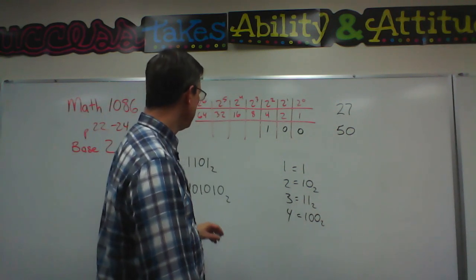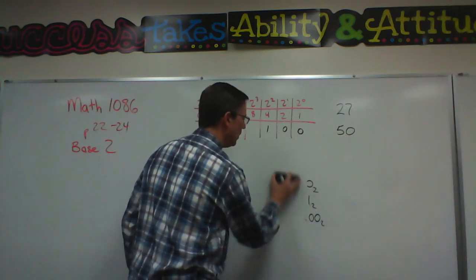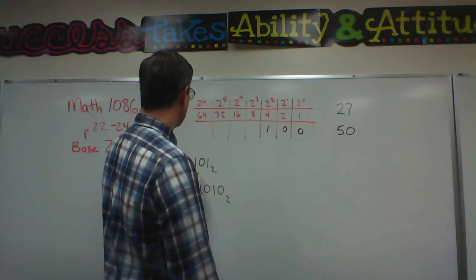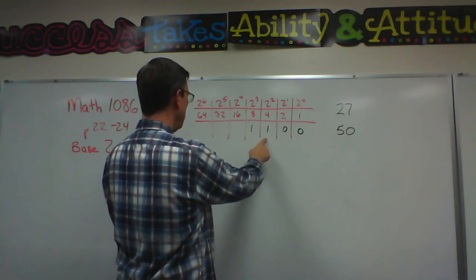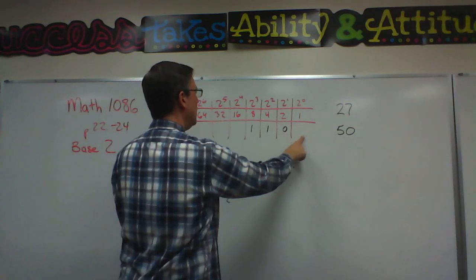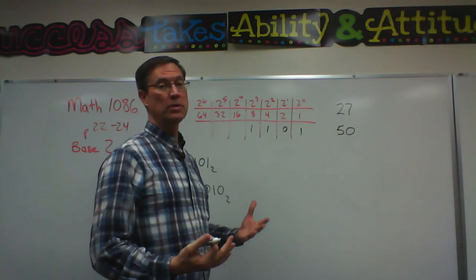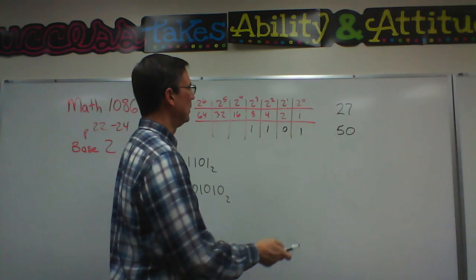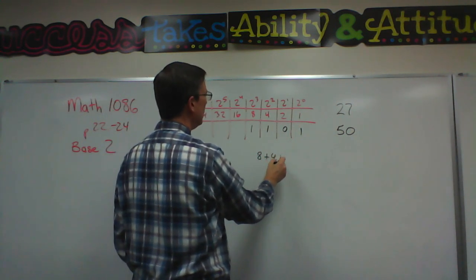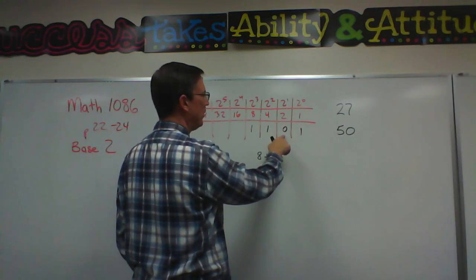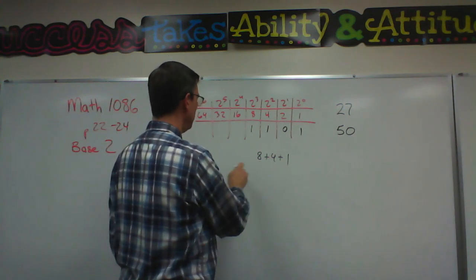Let's take a number like 1101. Try to figure out what would that be in base 2. So that would be a 1 here in the fourth place, a 1 in the third, a 0, and a 1 here. So we want to figure out what would the value be in the standard decimal numbers that we are familiar with. So we would add 8 plus 4 plus nothing here plus 1. That would be 13.